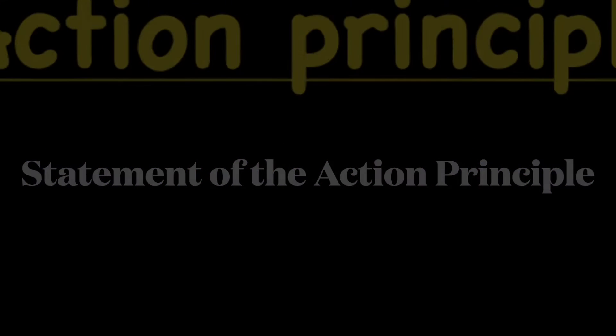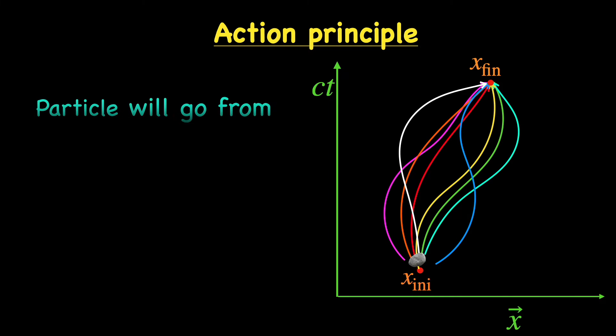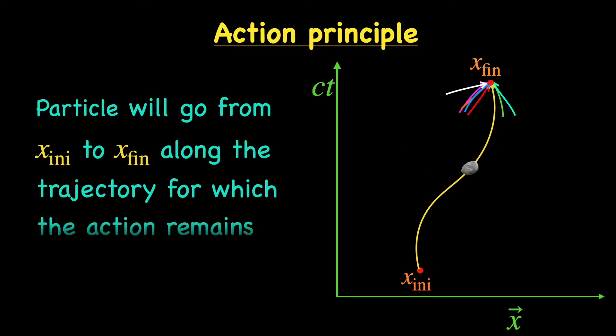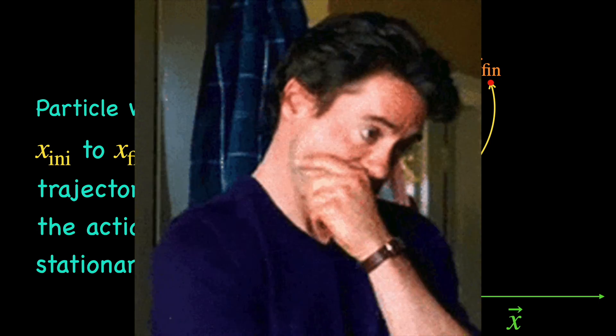Now what does the action principle say? It says that to travel from the given initial location x(t_initial) to the final location x(t_final), among all the possible trajectories the particle will choose to follow that particular trajectory for which the value of the action remains stationary. Yeah, it does sound kind of complicated and abstract, so let's go over this critically.